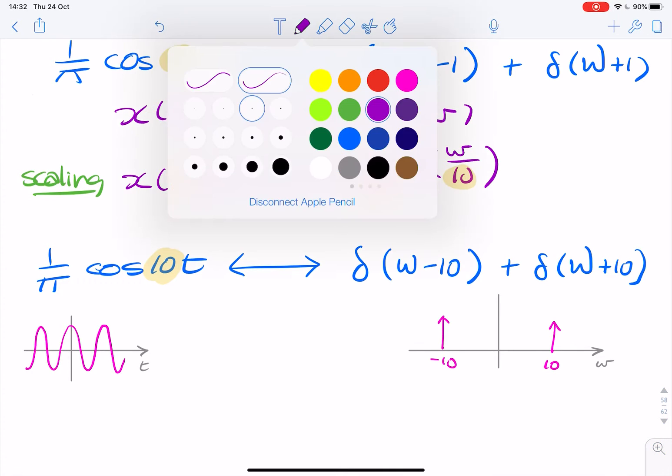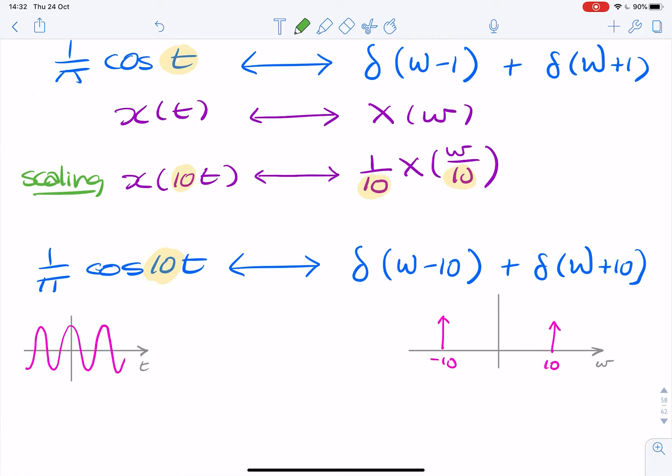Now, if I were to write that in the frequency domain for this as my x of omega, then it would look something like this: 1 over 10 times an impulse of omega over 10 minus 1 plus omega over 10 plus 1. So his question basically was, that looks nothing like that.